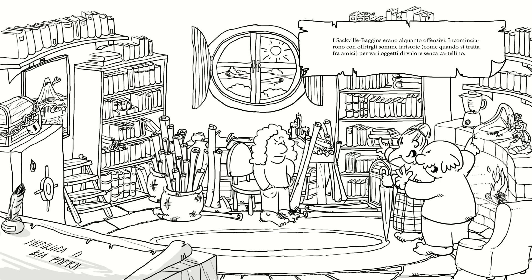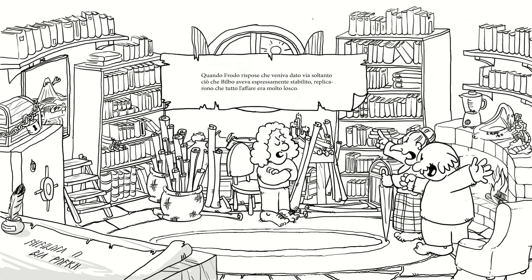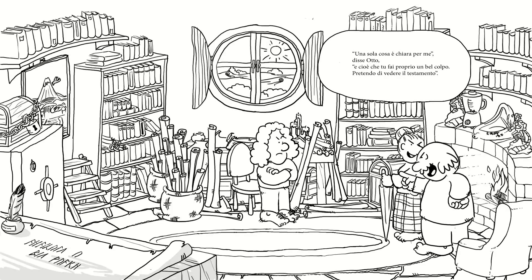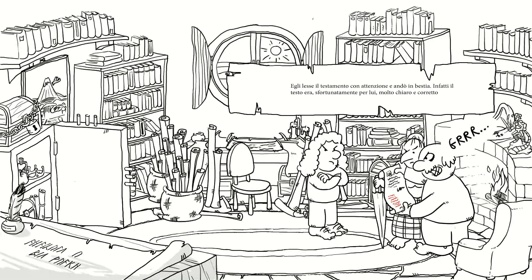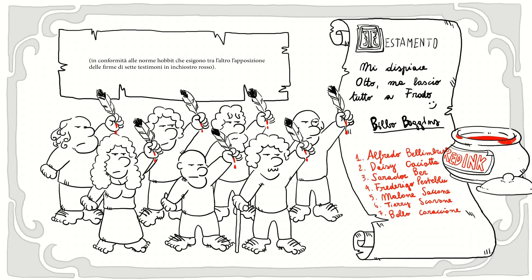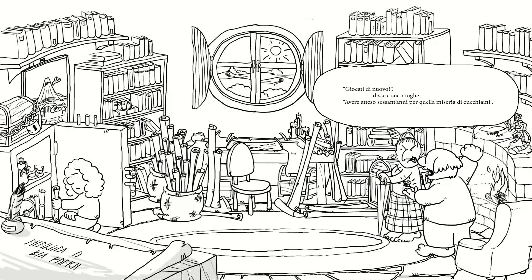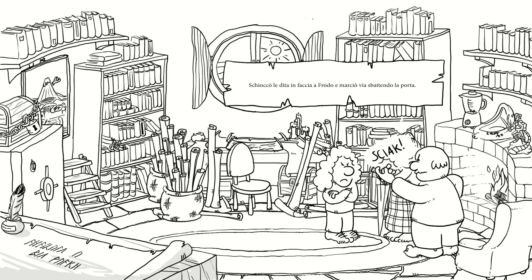Finalmente furono fatti accompagnare nello studio. Frodo era seduto alla scrivania circondato da un mare di carta; sembrava indisposto, perlomeno la visita dei Sackville-Baggins lo indisponeva manifestatamente. Si alzò, giocherellando con qualcosa che aveva in tasca; comunque si comportò molto educatamente mentre i Sackville-Baggins erano alquanto offensivi. Incominciarono con offrirgli somme irrisorie per vari oggetti di valore senza cartellino. Quando Frodo rispose che veniva dato via soltanto ciò che Bilbo aveva espressamente stabilito, replicarono che tutto l'affare era molto losco: una sola cosa è chiara per me, disse Otho, e cioè che tu fai proprio un bel colpo; pretendo di vedere il testamento. Egli lesse il testamento con attenzione e andò in bestia: il testo era sfortunatamente per lui molto chiaro e corretto, in conformità alle norme Hobbit. Giocati di nuovo! disse a sua moglie, e schioccò le dita in faccia a Frodo e marciò via sbattendo la porta.